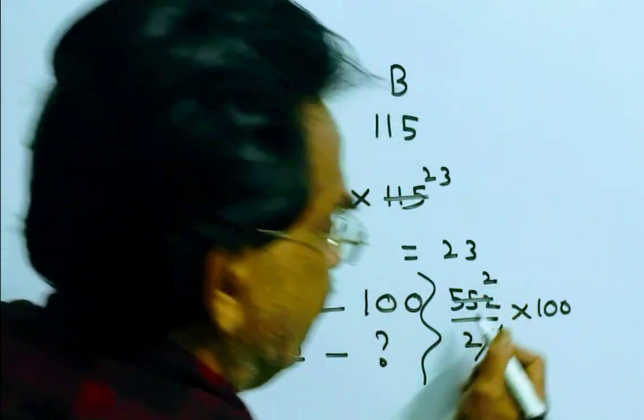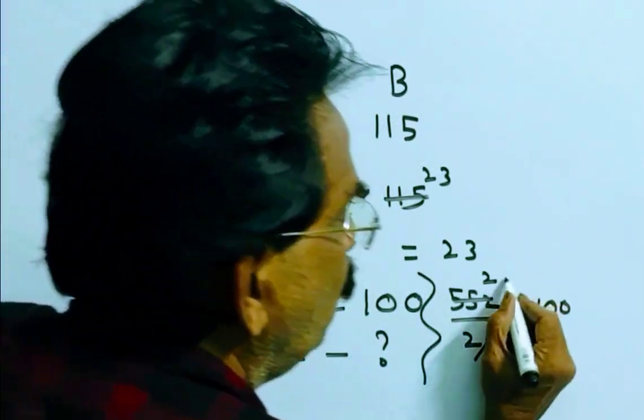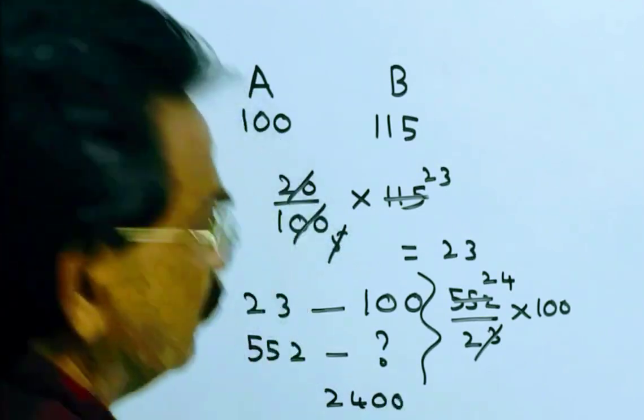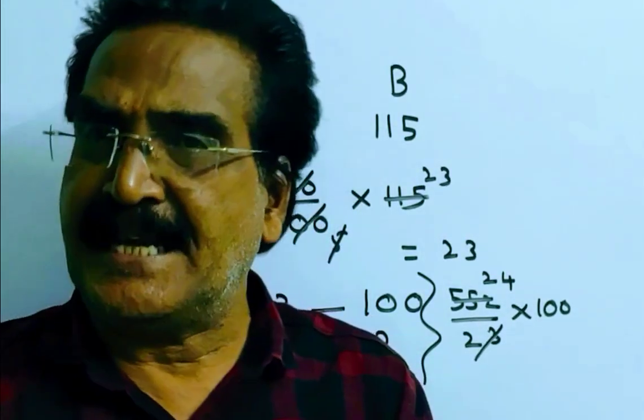23, 2, 46, 9, 92, 23, 4. Friends, 2400. 2400 is the price paid by A. Thank you.